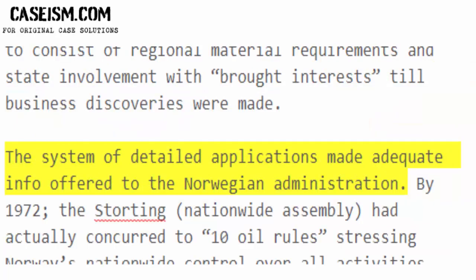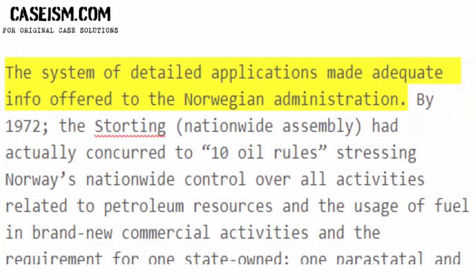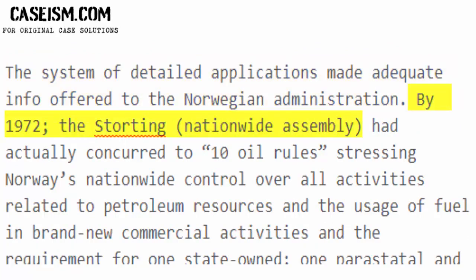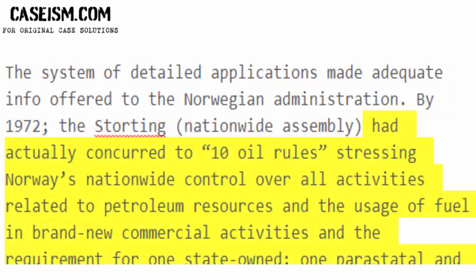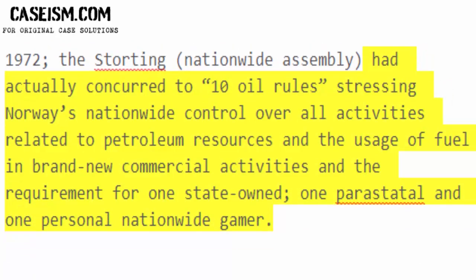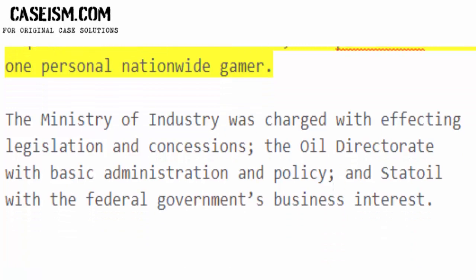The system of detailed applications made adequate information available to the Norwegian administration. By 1972, the Storting Nationwide Assembly had agreed to 10 oil rules stressing Norway's national control over all activities related to petroleum resources, the usage of fuel in new commercial activities, and the requirement for one state-owned, one parastatal, and one private national player.